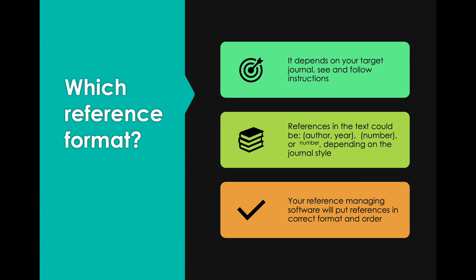Reference format differs by journal, so before you start writing, figure out what your target journal is and look at their instructions. References could be author-year, a numbered list, or a numbered list shown as a superscript — it really depends on the journal. Your reference-managing software will put all the references in the correct format and in the correct order, so make good use of that.